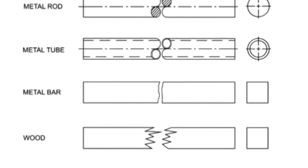Long break lines are typically full, ruled lines with freehand zigzags that are used to show breaks in shafts, rods, tubes, rope, and so on, which have a portion of their length broken out for convenience.